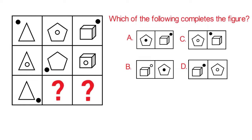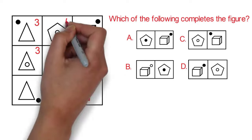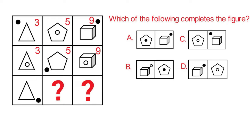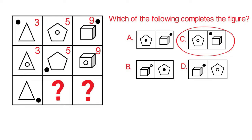Always look for patterns. There are multiple patterns here. First, the shapes have lines in order: triangle has three lines, pentagon has five, and cube has nine. Second, the small circle inside the shape alternately rotates from inside to outside. Third, the black circle outside the shape also changes its location. Following these patterns, the correct answer is choice C.